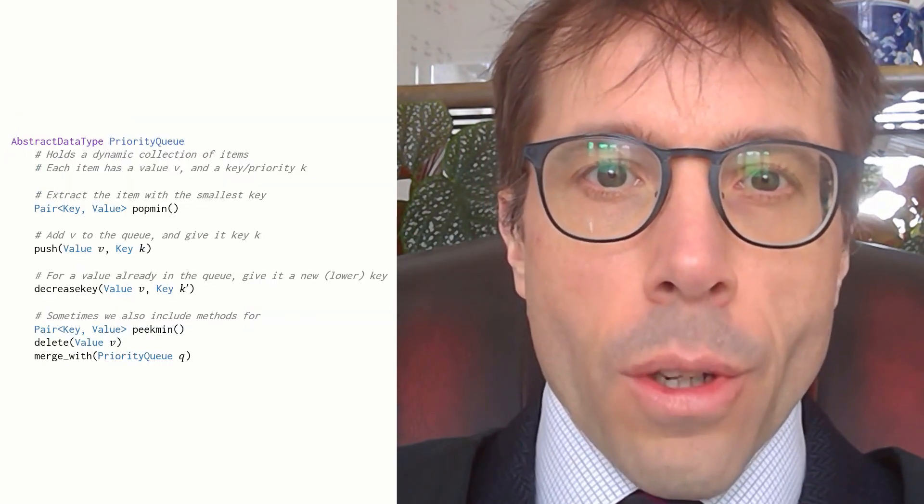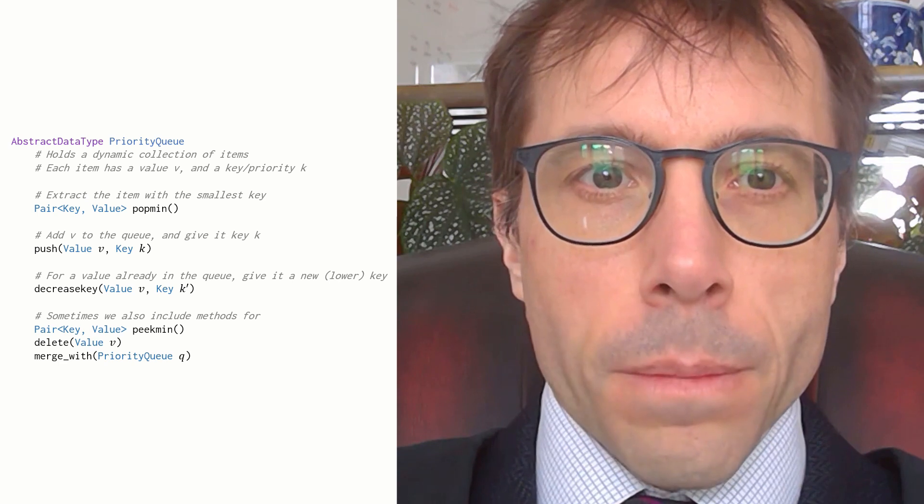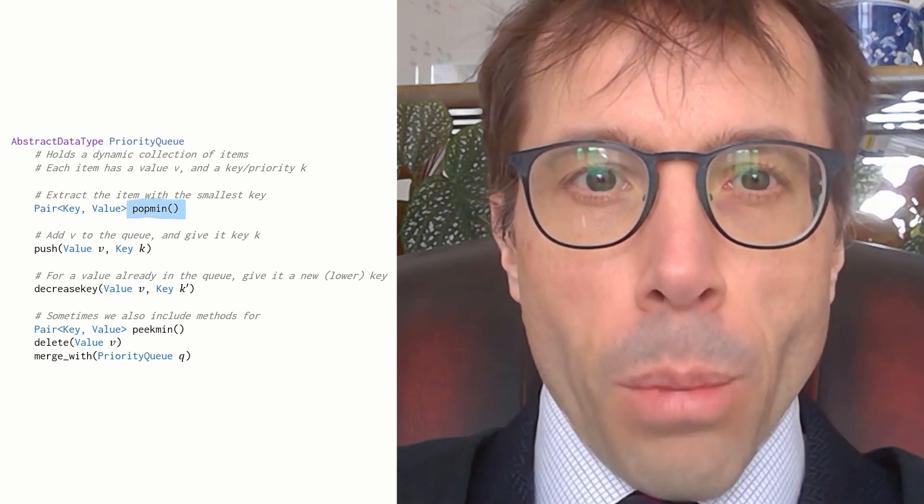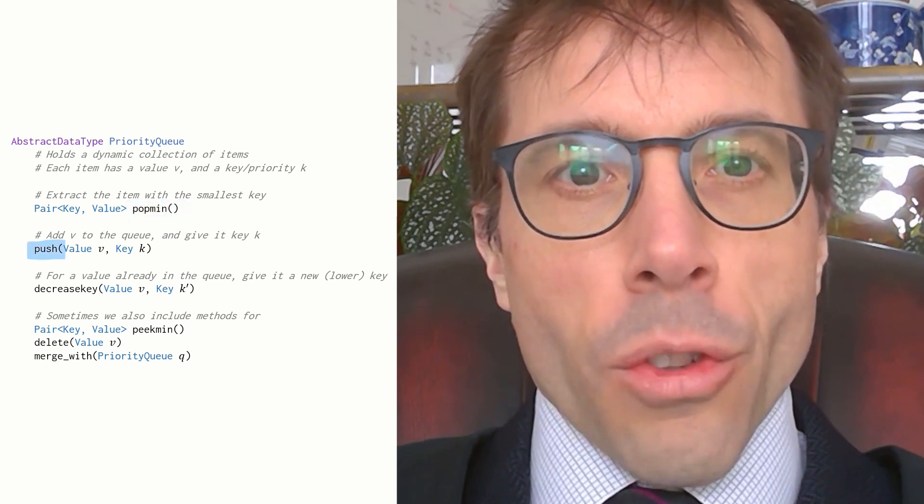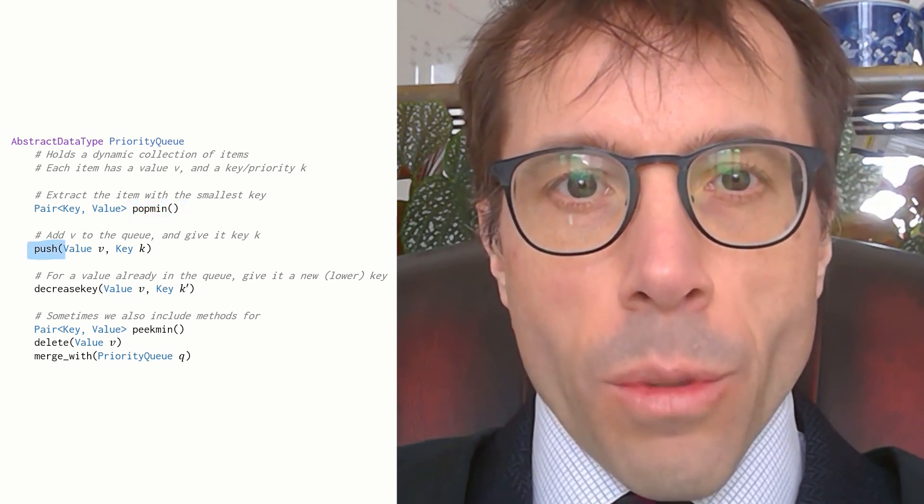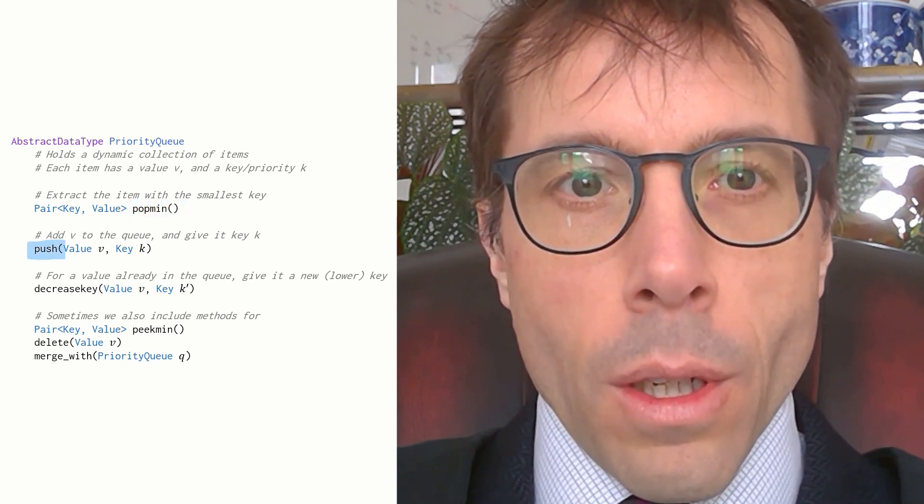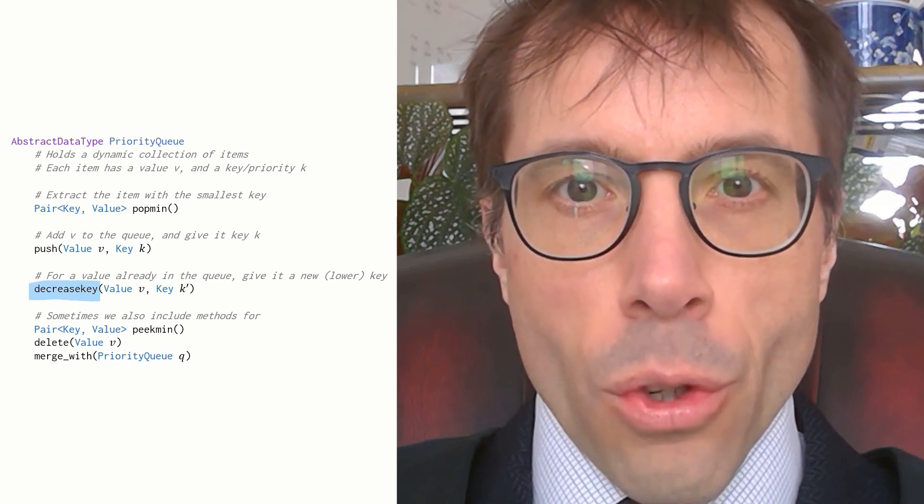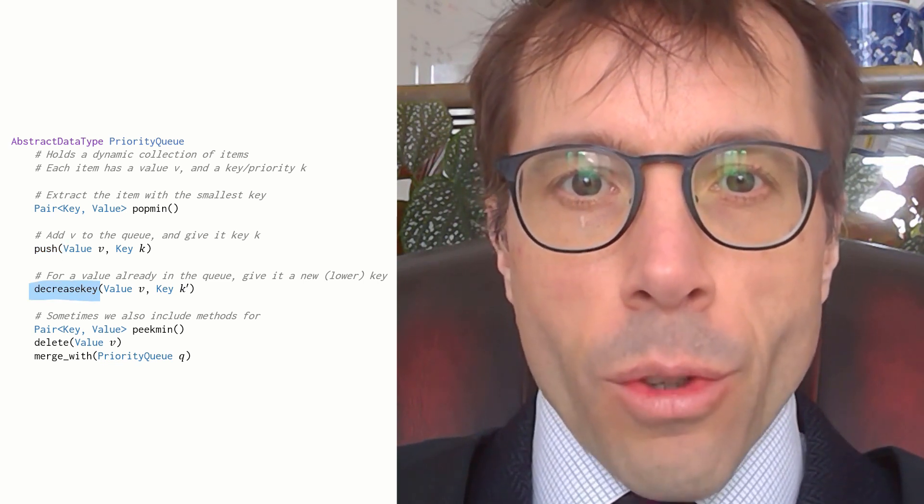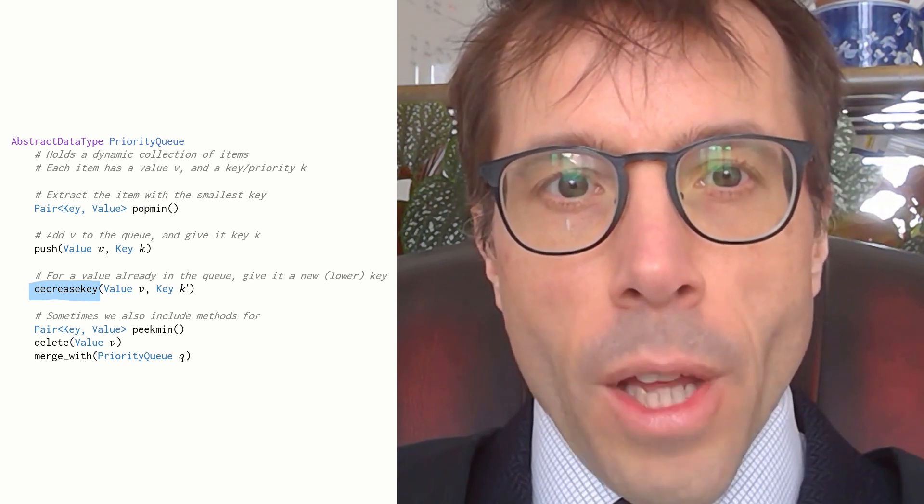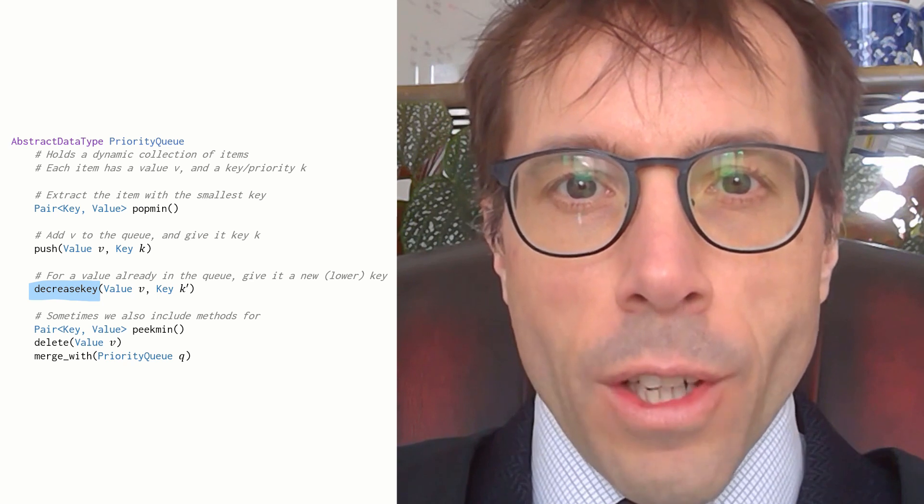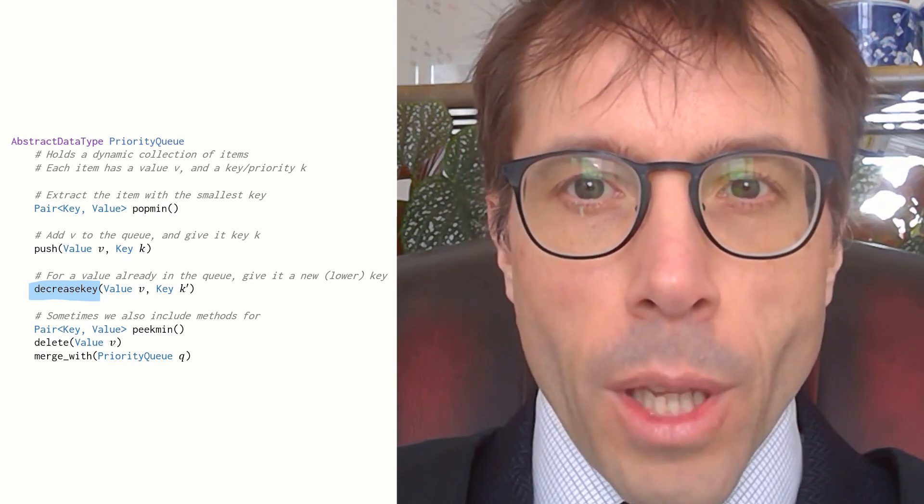Here's the formal definition of the abstract data type. It supports pop min to pick out the item with the smallest key. It supports push to add a new item with its key to the queue. And it supports decrease key. Dijkstra's algorithm uses this whenever it finds a better path to a vertex. In a simulator, you'd use it to say this agent actually needs to be woken up earlier than previously planned.